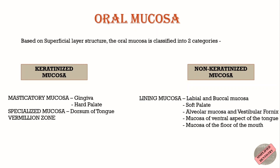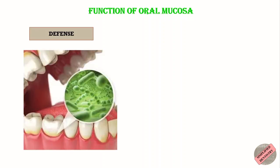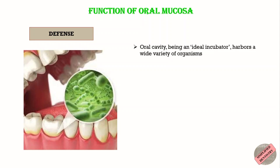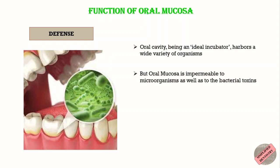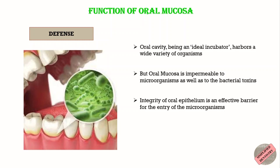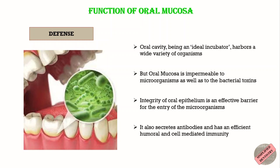The oral mucosa has many important functions. The first is defense. The oral cavity is an ideal incubator as it harbors a wide variety of organisms, but the oral mucosa is impermeable to microorganisms as well as to bacterial toxins. This is because of the epithelial integrity — that is, the intactness of the oral epithelium — which offers an effective barrier for the entry of microorganisms. It also secretes antibodies and has an efficient humoral and cell-mediated immunity.